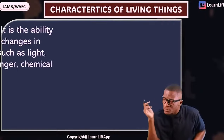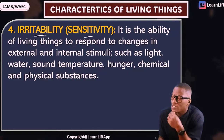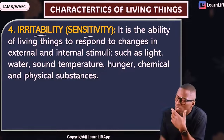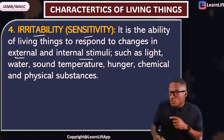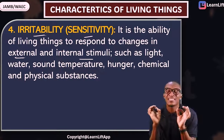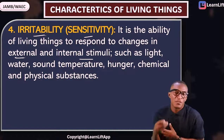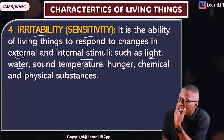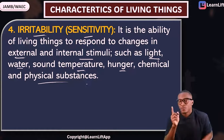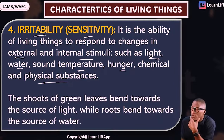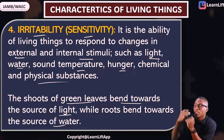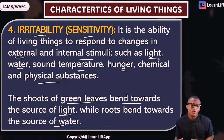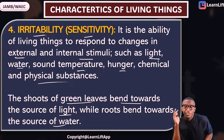The next property is irritability or sensitivity — the ability of an organism to respond to stimuli, either external or internal. For example, if a hot object touches you, you feel the pain and remove your hand — that is irritability. Only living things respond to stimuli from the environment; that stimuli can be light, water, temperature, hunger, or chemical and physical substances. Also, the shoot of green plants bends towards the source of light, while the roots bend towards the source of water.